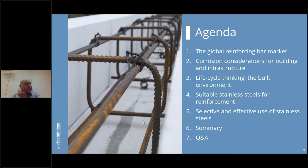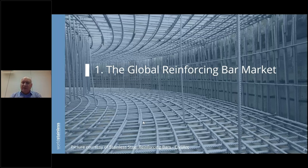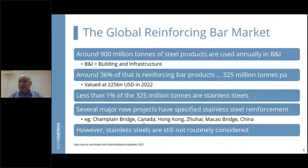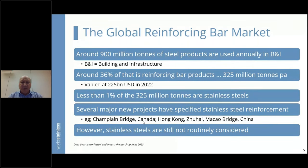The right place to start is by considering the total amount of steel products used in building and infrastructure annually — around half of total globally produced steel products. 900 million tons is around half of total annual steel production, and a little over a third of that — 36% — is reinforcing bar products. In tonnage terms, that's a significant 325 million tons per annum, valued in 2022 at over 220 billion US dollars. However, stainless steel usage in this application area is less than one percent.